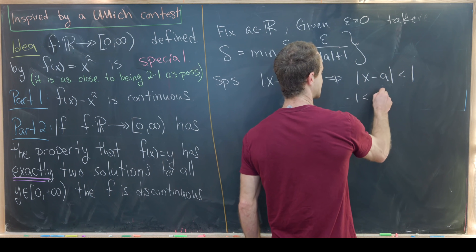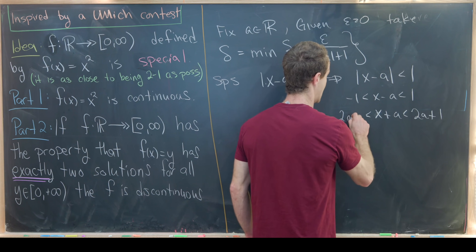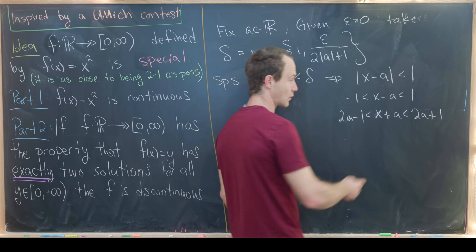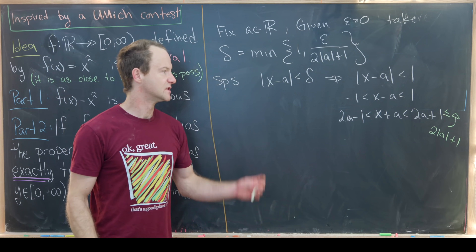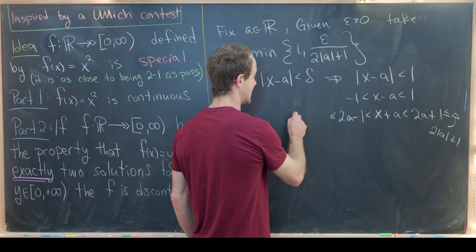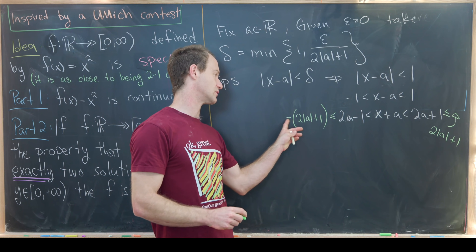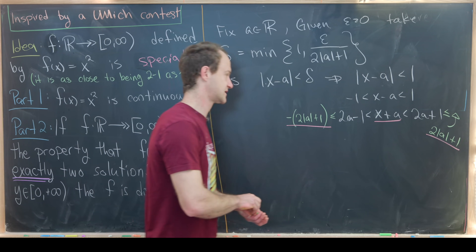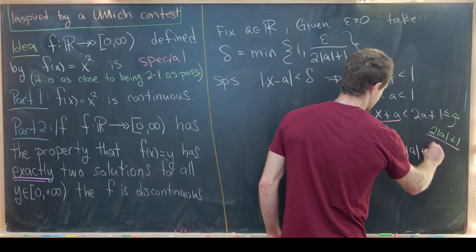From |x − a| < 1, we get that x − a is between −1 and 1, which means x + a is between 2a − 1 and 2a + 1. We then sneak in the bounds 2|a| + 1 above and −(2|a| + 1) below, using the fact that |a| ≥ a and a ≥ −|a|. This gives us |x + a| < 2|a| + 1.